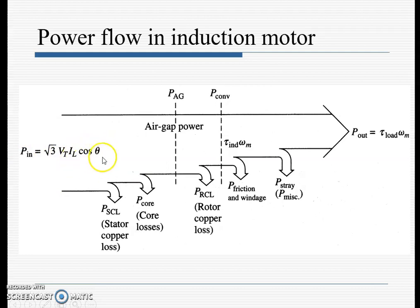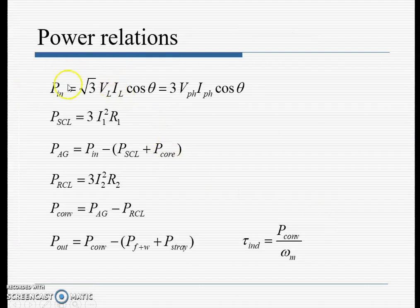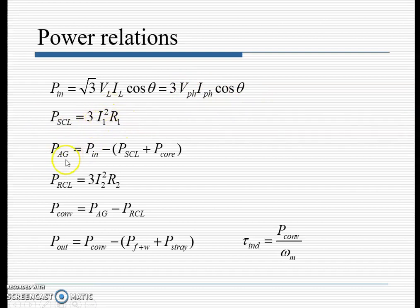The first losses subtracted are stator copper losses, then core losses, leaving the air gap power. Then rotor copper losses are subtracted. After friction, windage, and stray losses, the output power is torque × ω_m. The input power relations are: P_in = √3 · V_L · I_L · cos θ = 3 · V_phase · I_phase · cos θ. Stator copper loss = 3I₁²R₁. Air gap power = P_in − (stator copper loss + stator core loss).